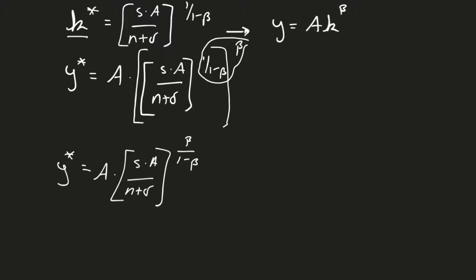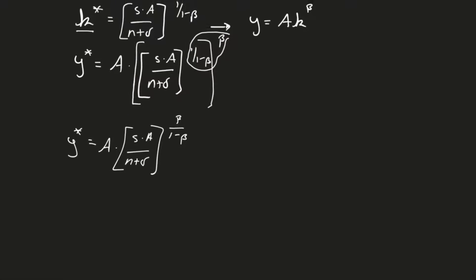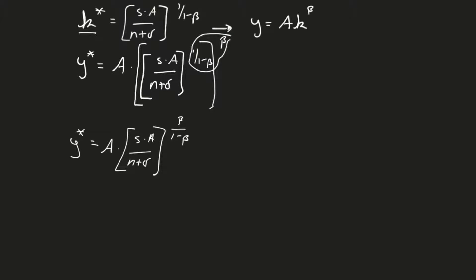What I'm going to do now is, since I have an a, I have my total factor productivity here, I'm going to split these out. y star equals a times a to the beta over 1 minus beta, times s over n plus delta to the beta over 1 minus beta.